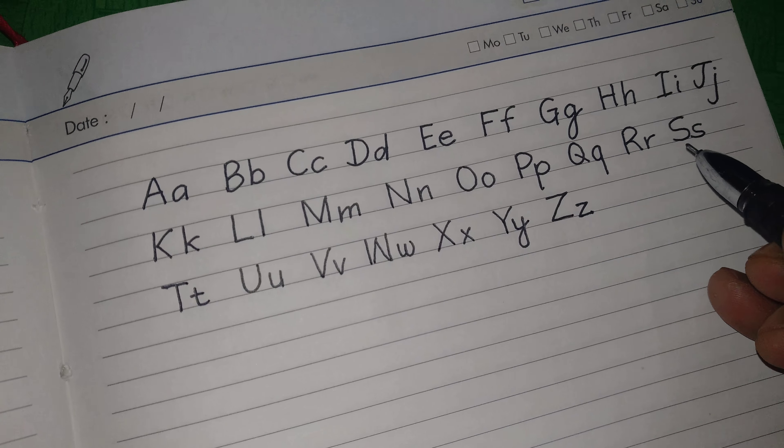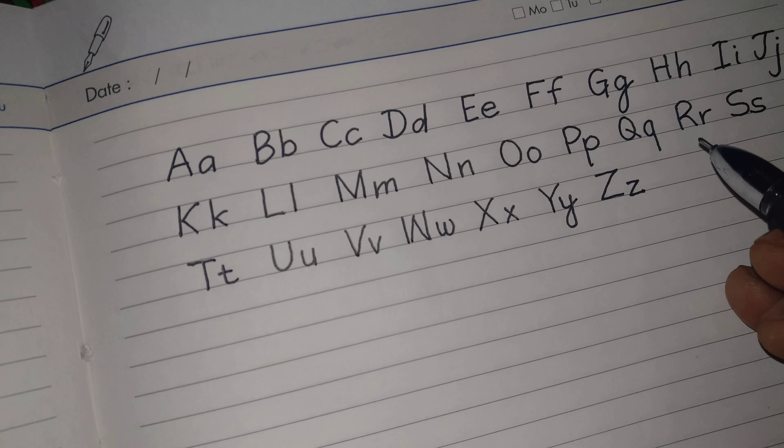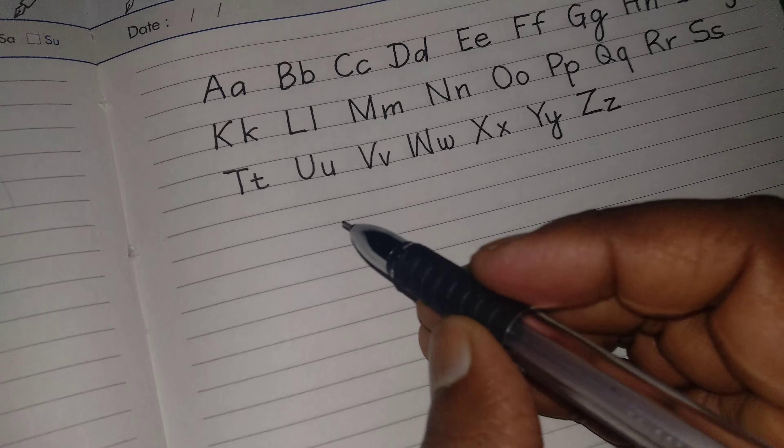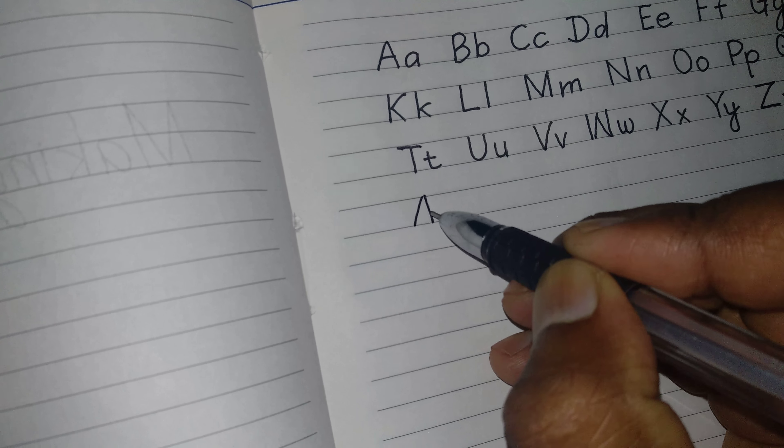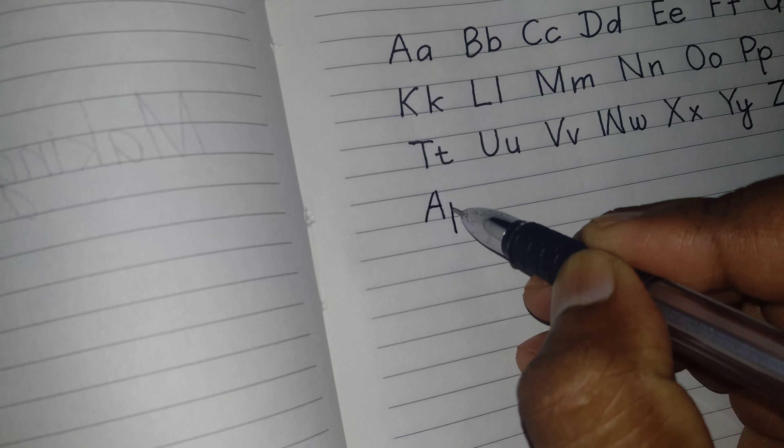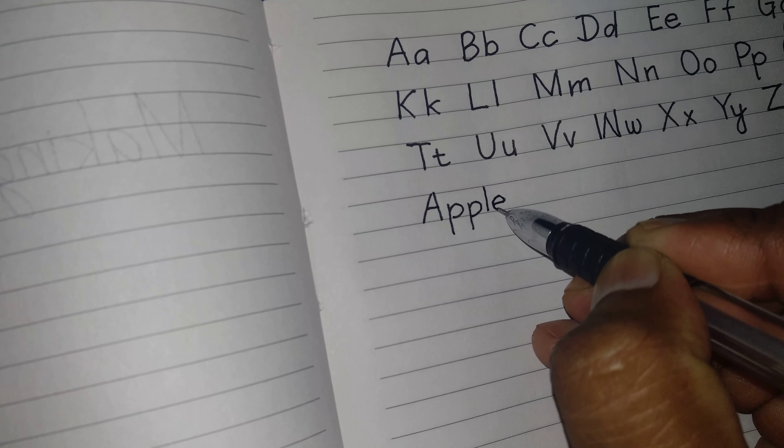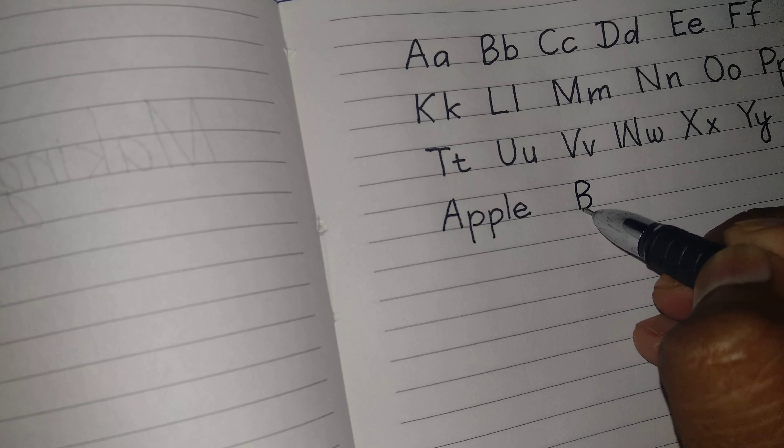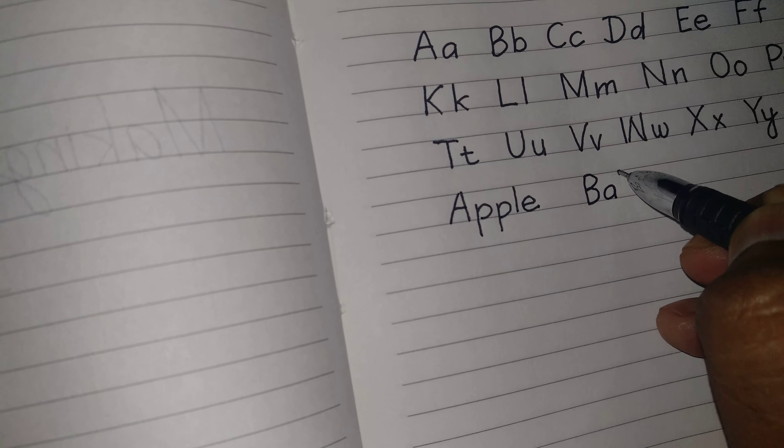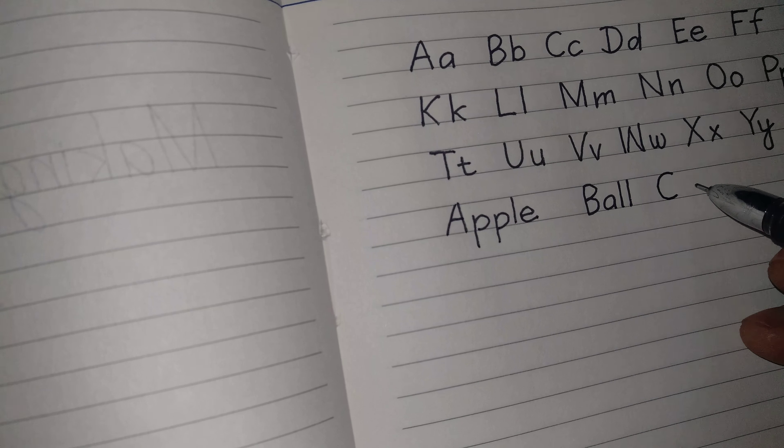If you could maintain this kind of writing, you will improve immediately. So let's start with some words. A-P-P-L-E, so this is Apple. B-A-L-L, Ball. C-A-T, Cat.